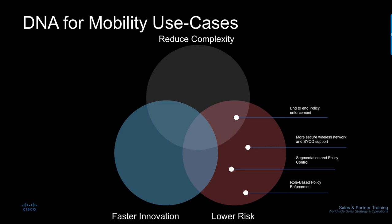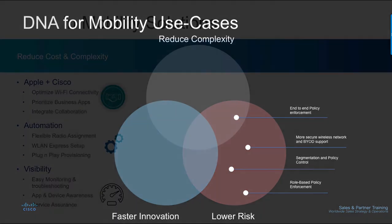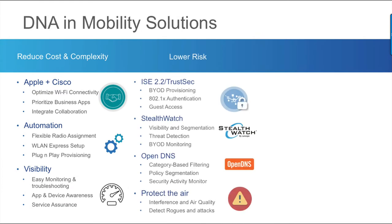A variety of solutions such as TrustSec, StealthWatch, OpenDNS, CleanAir, Rogue Detection, and WIPS are tightly integrated into the network so that the network, acting both as a sensor and enforcer, can provide security everywhere.